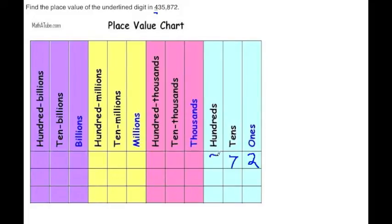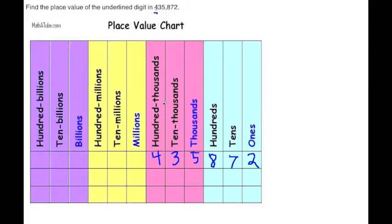Next value to the left is eight, so we put that there — that's our hundreds place. Next value to the left is five, so that's our thousands. Next value is three, and the last is four. So we found out that the underlined digit is in the hundred thousands column.